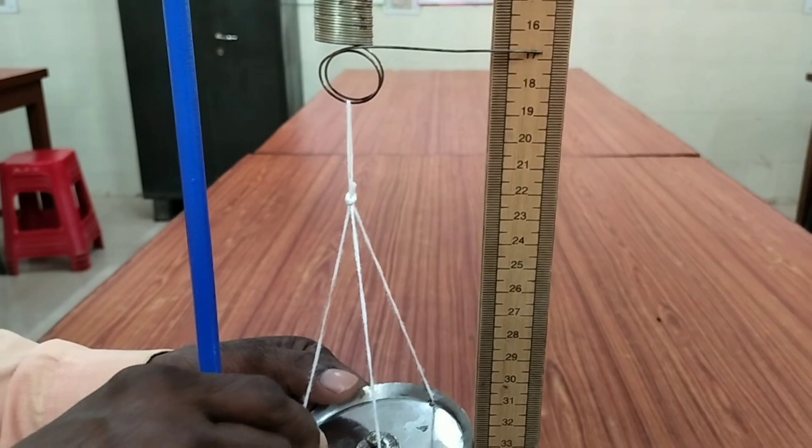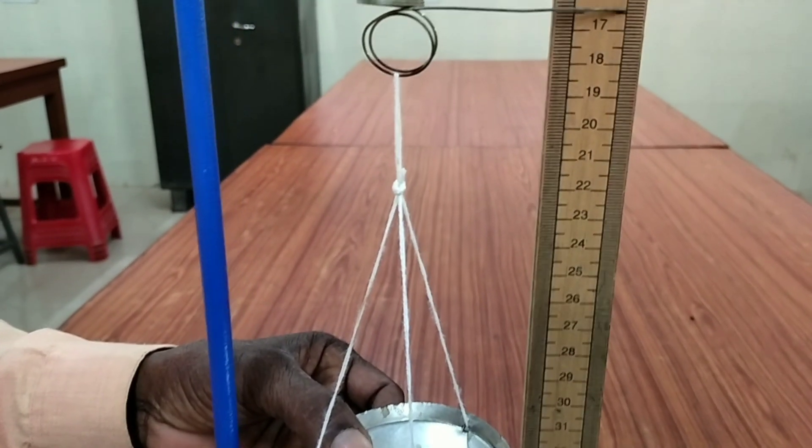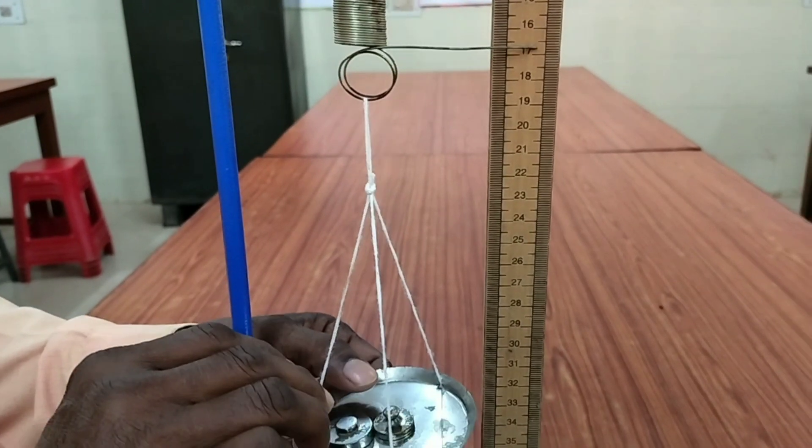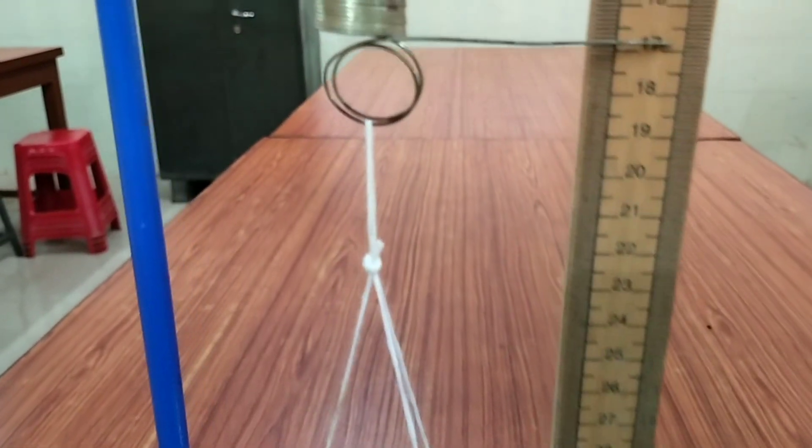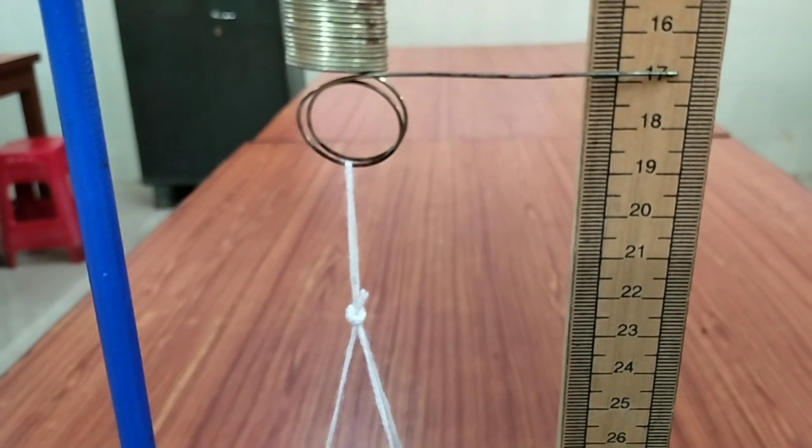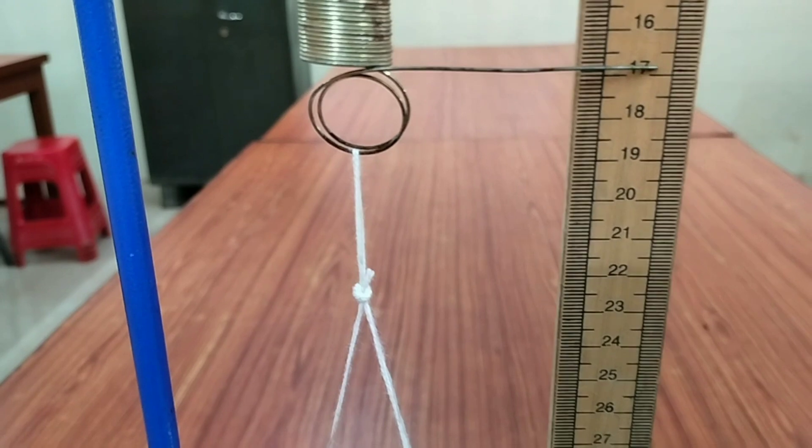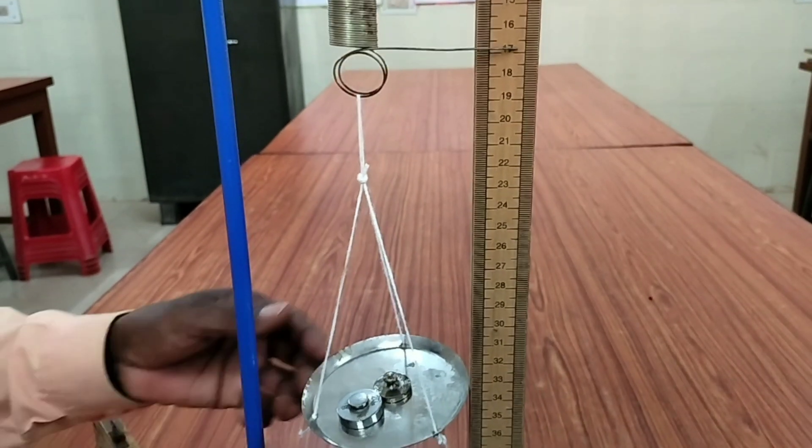Then I have added 20 gram. After adding 20 gram, you see the extension. When you take the extension, you subtract the value of the length when there is no mass in the pan.